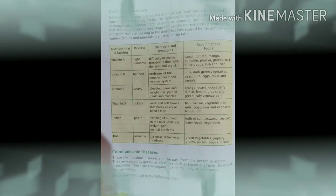Now vitamin C. Scurvy. This disease name is Scurvy. Then the disorders and symptoms are bleeding gums and weight loss, pain in joints and muscles. Recommended foods are orange, guava, amla (that means amla), lemon, grapes and green leafy vegetables.